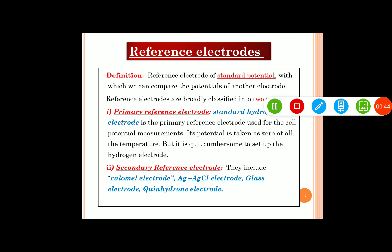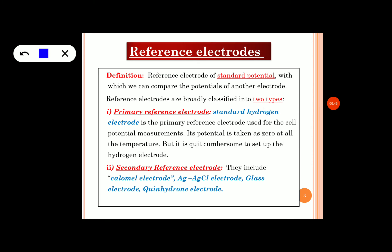We know that there are two types of reference electrodes. One is the primary reference electrode and the second one is the secondary reference electrode. A standard hydrogen electrode is an example of a primary reference electrode, whereas the calomel electrode, the Ag/AgCl electrode, glass electrode, and quinhydrone electrode are a few examples of secondary reference electrodes.